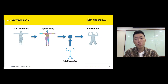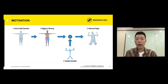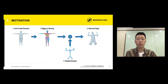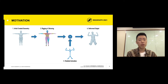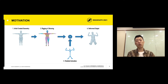Let's first start with the existing pipeline for character animation. To animate a character, the artist needs to manually create the underlying skeleton, known as rigging, and the binding between skeleton and the mesh, called skinning. After this tedious step, the artist can import a skeleton animation, which may be acquired from some motion capture system, and get the deformed output.